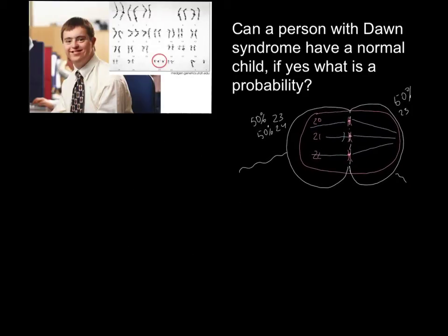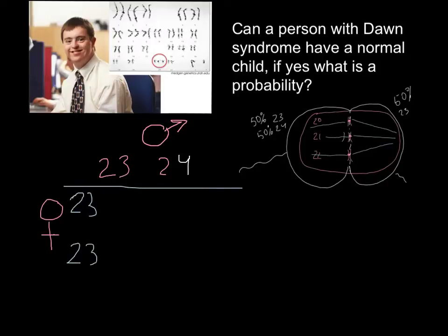Now we can build a Punnett square. Here would be male on this side, and here would be female on this side. As I said, we have 50% probability for the sperm to have 23 chromosomes and 50% probability to have 24 chromosomes. For the normal female, we have 23 chromosomes and 23 chromosomes. So now we can build a Punnett square.